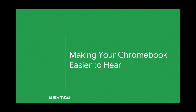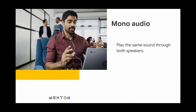Moving on to a feature to make your Chromebook easier to hear — mono audio, which came out in late 2017. It's a straightforward feature that stabilizes the audio and plays the same audio through both speakers or both earbuds. This can be really meaningful for anybody who is hard of hearing or has hearing loss in one ear and doesn't want to miss out on content playing in stereo sound. Mono audio lets you equalize it and play the same audio through both.